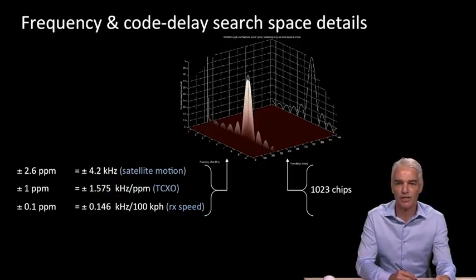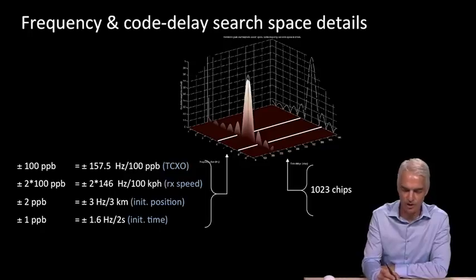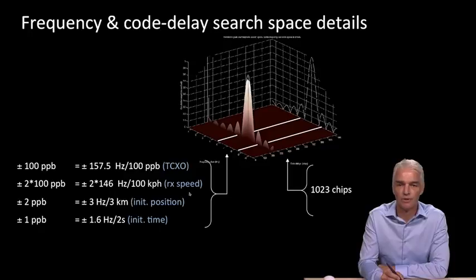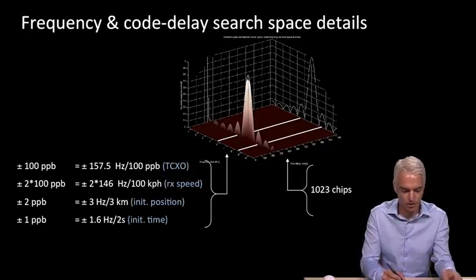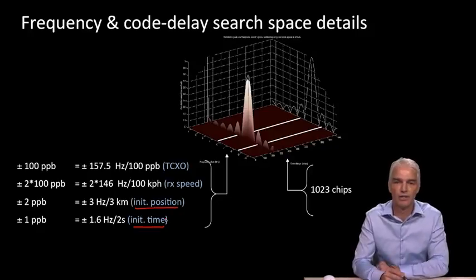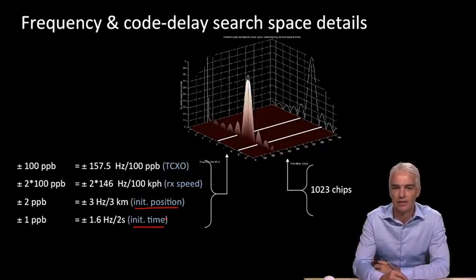Now when we have Assisted GPS, we're going to look at limiting the search space to just searching between the lines. What are the main contributors? How we get all of these different values for TCXO, receiver speed, initial position, and initial time. Remember that we get Assisted GPS by having an initial position and initial time and working out what we expect the Doppler of the satellite to be. That expected Doppler is a function of the initial position and initial time.